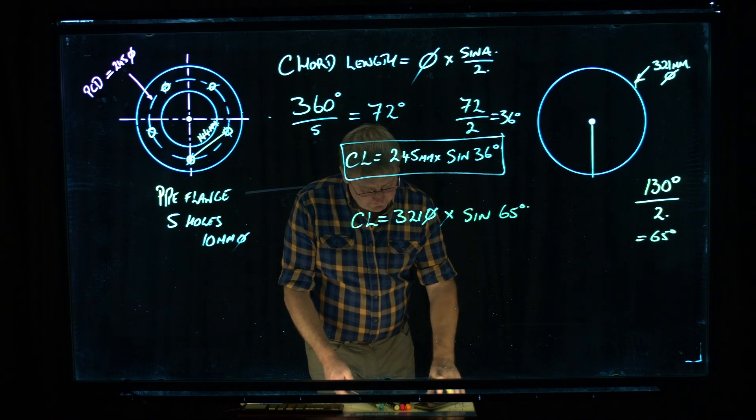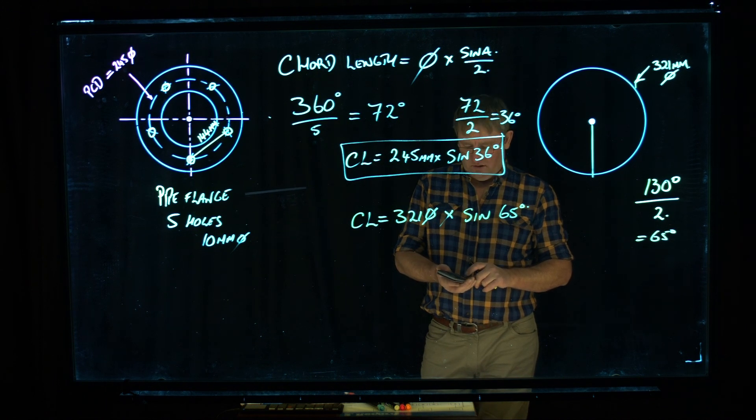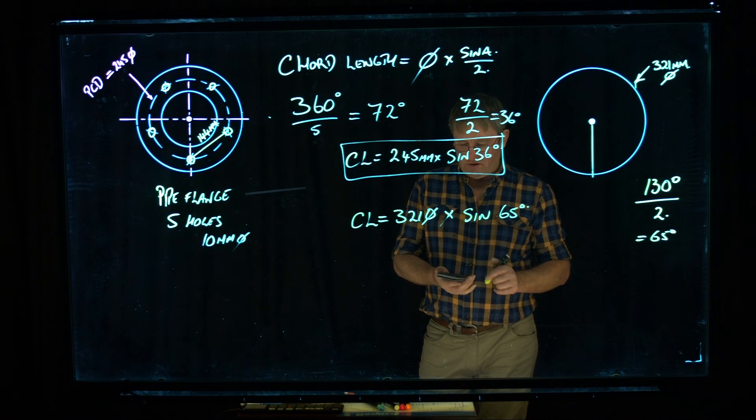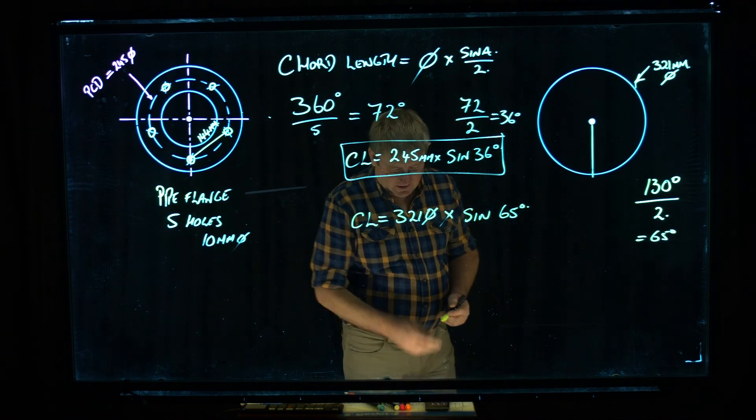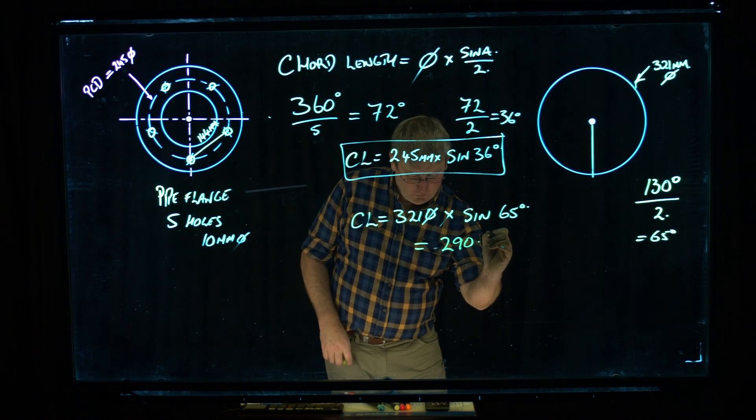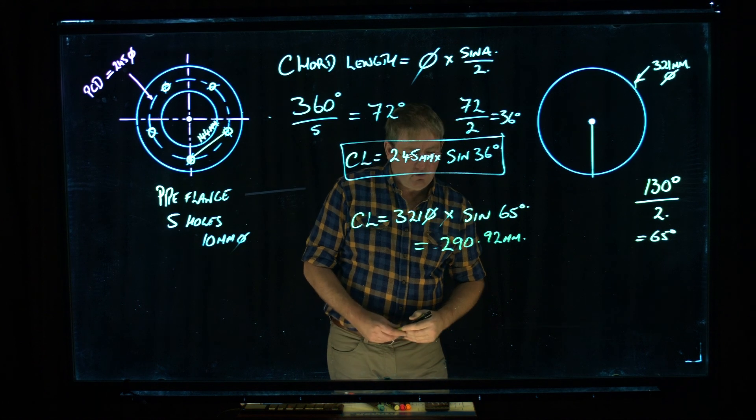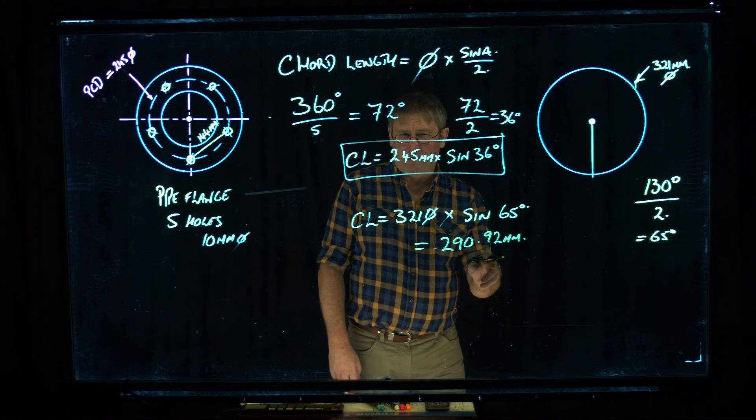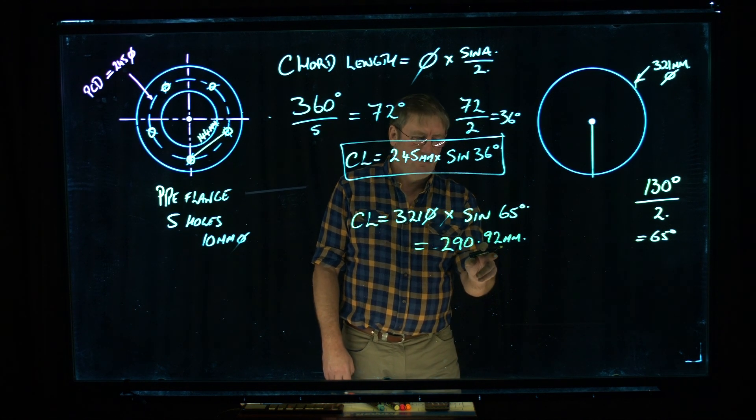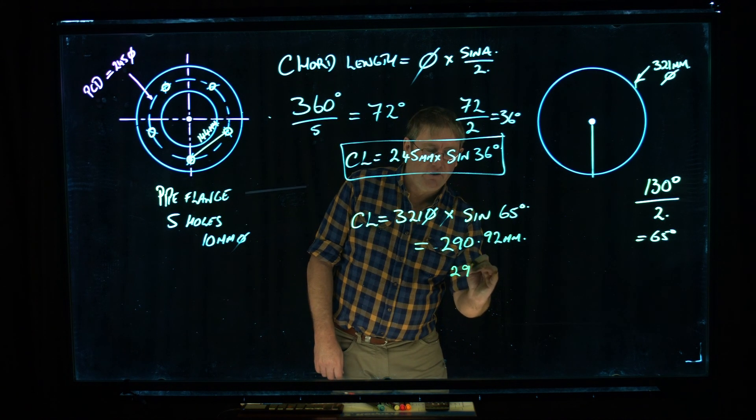So into the calculator, just going to do that, 321 times sine 65 equals, that gives me an answer there, of 290.92mm. So obviously you're not going to be able to set your compass to 290.92. You're probably going to round it to 291mm.